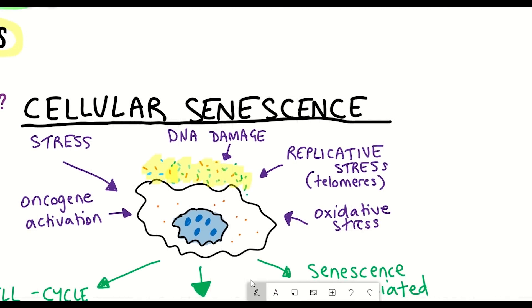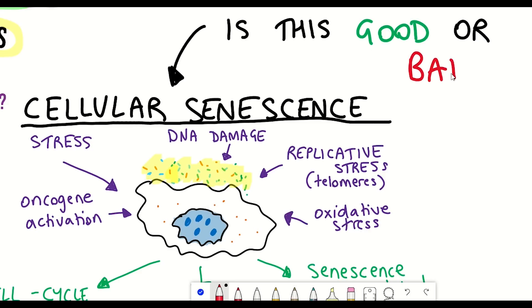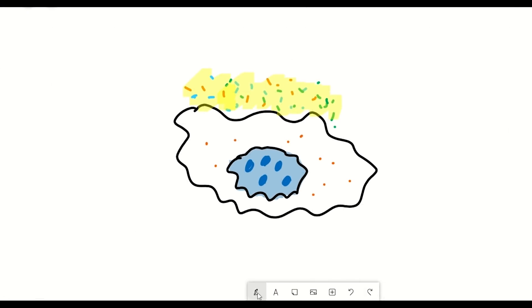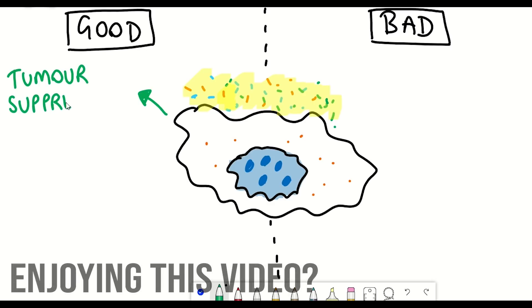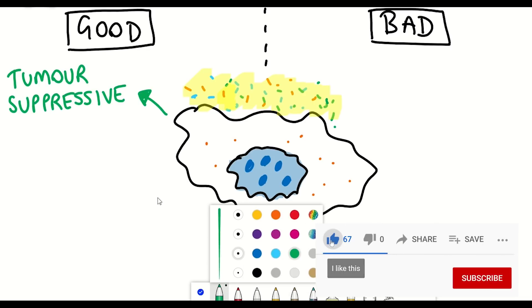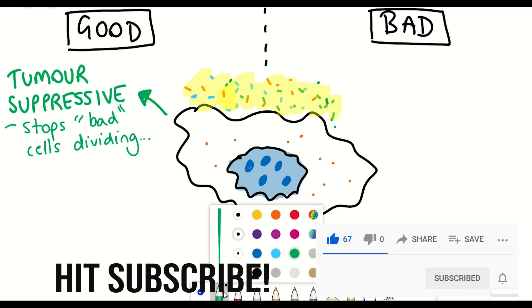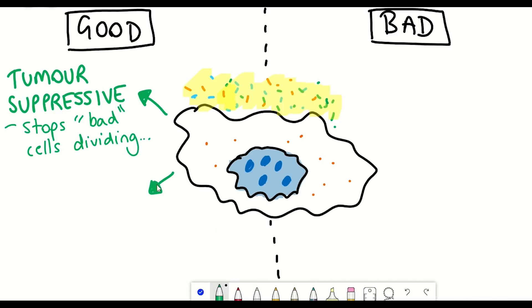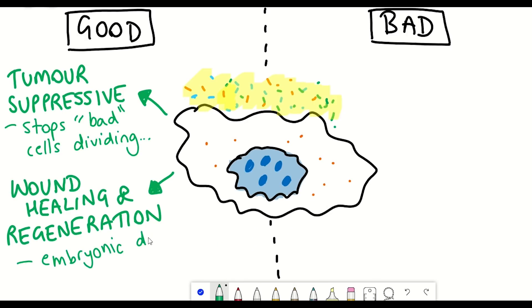The biological consequences of senescent cells could be seen as either beneficial or deleterious. In terms of beneficial outcomes, cellular senescence is thought to be a tumor suppressive mechanism, because it prevents a cell with DNA damage or an expressed oncogene from further dividing and potentially forming a tumor. Moreover, senescent cells are thought to be beneficial for wound healing, regeneration, and embryonic development.